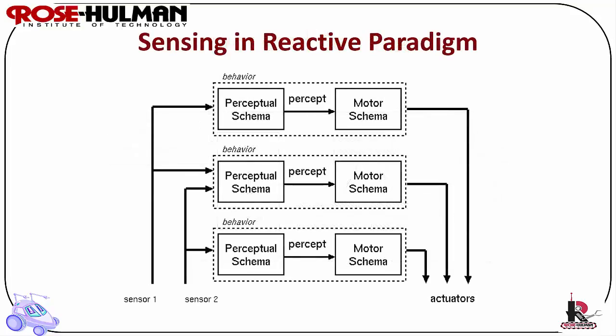Sensing in a reactive paradigm: here's an example of how schema theory would look in a reactive paradigm. The combination of sensors has a specific signature or perceptual schema, and the perceptual schema releases the motor schema for robot navigation. There are three different behaviors — for example, obstacle avoidance, wall following, and object retrieval. They work in parallel, but each perceptual schema triggers a unique motor schema, and those combine together to create some type of emergent behavior.